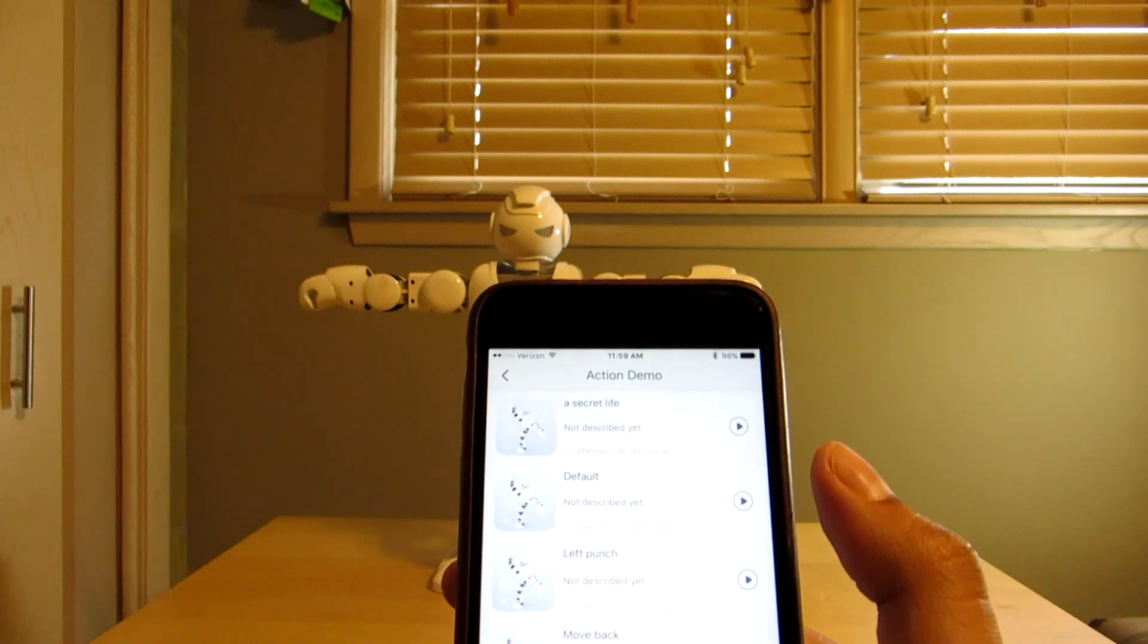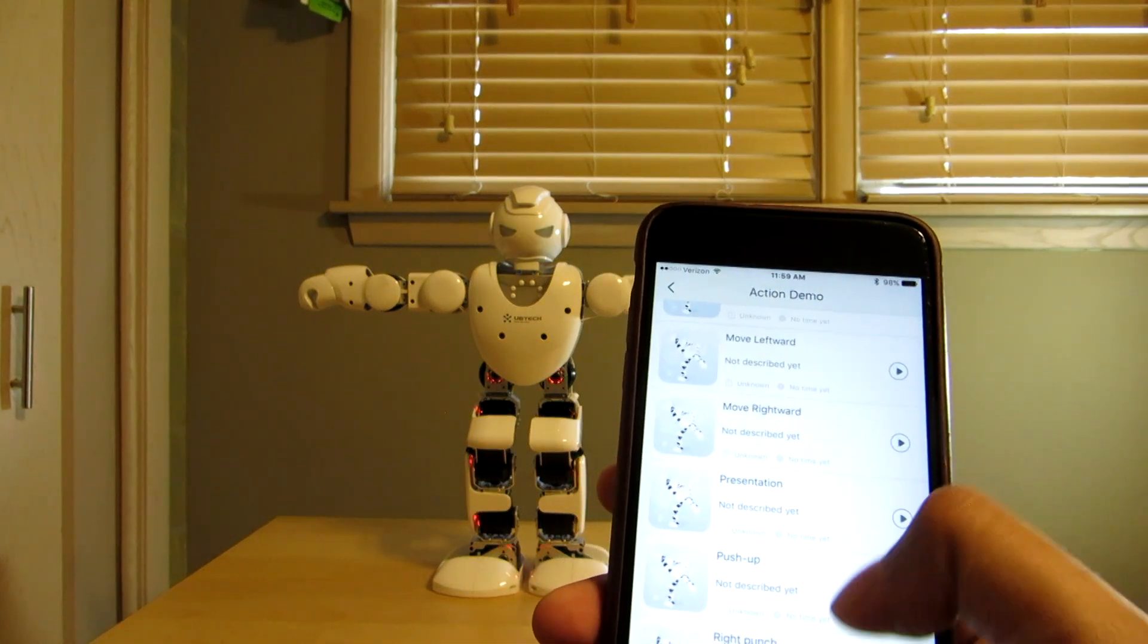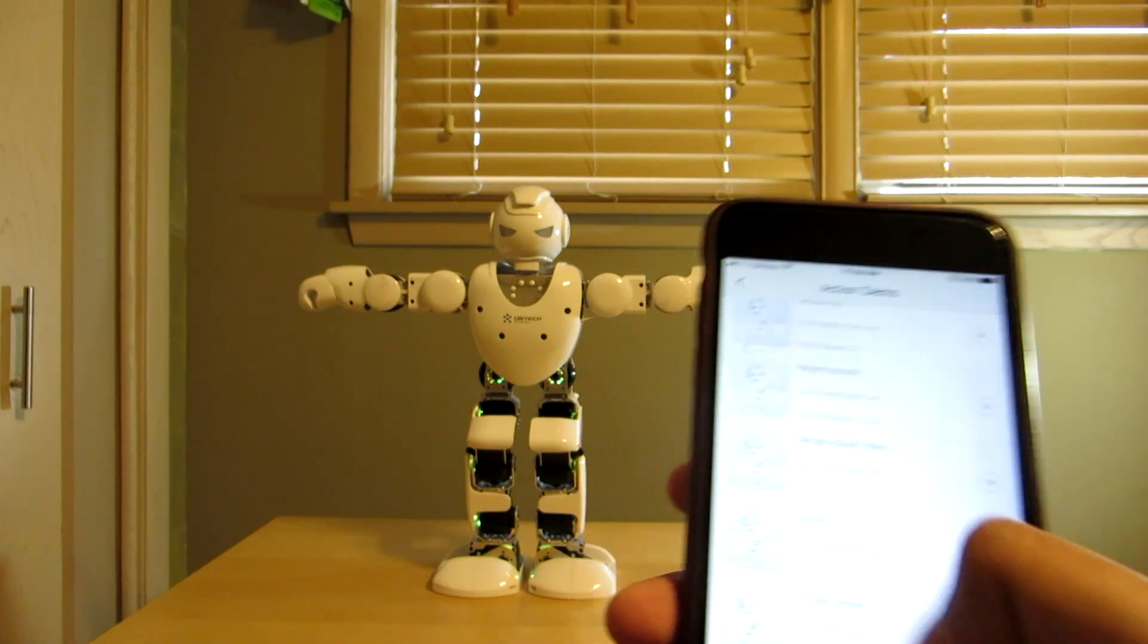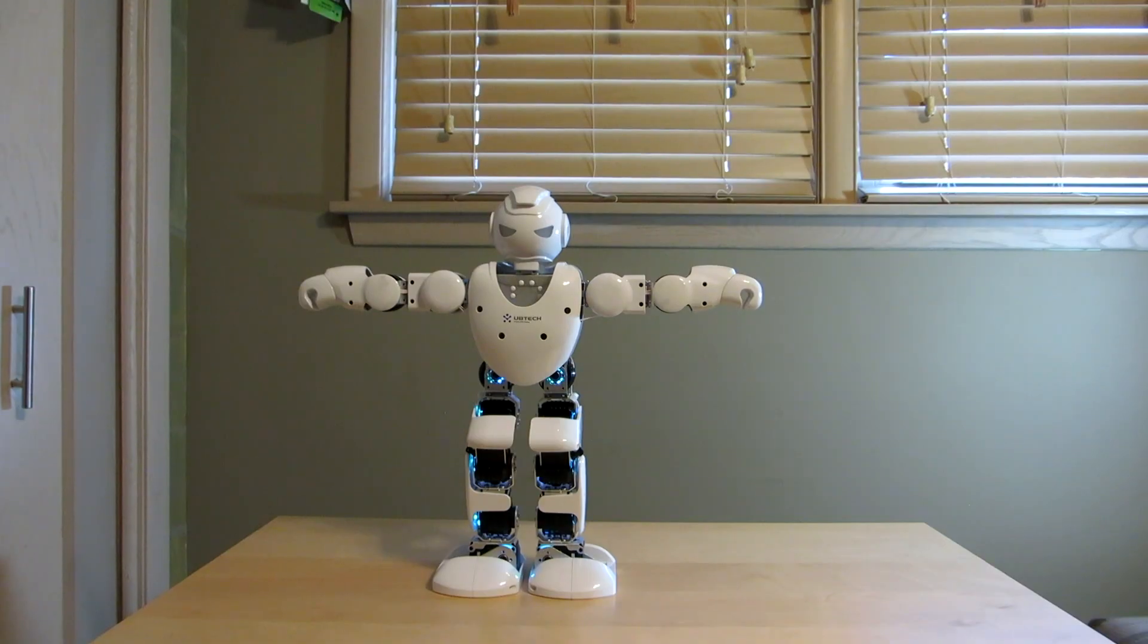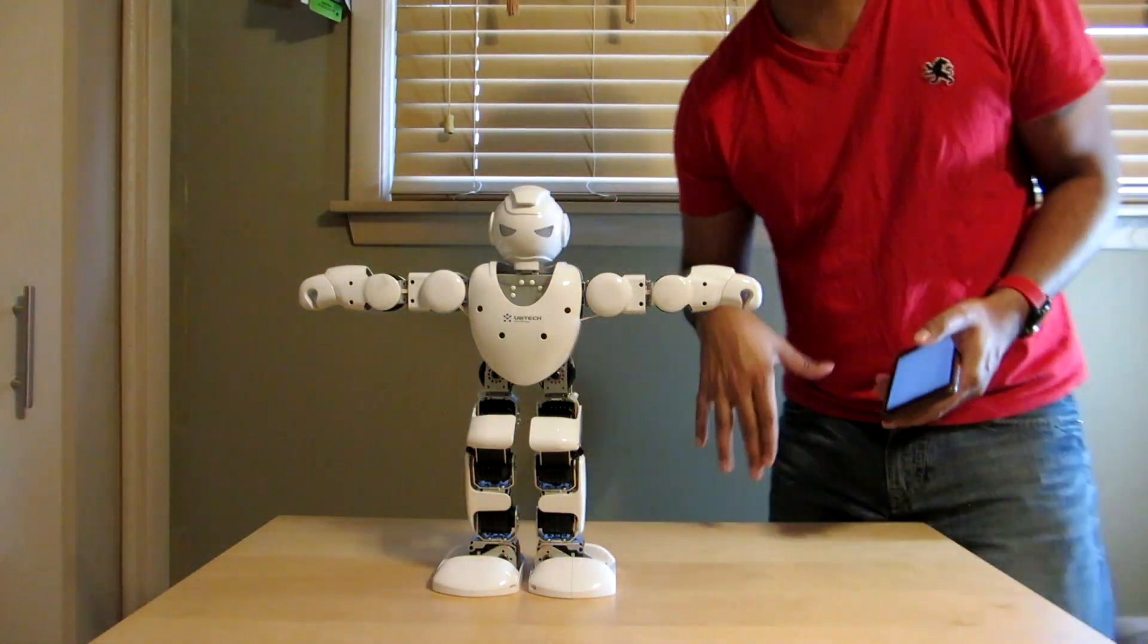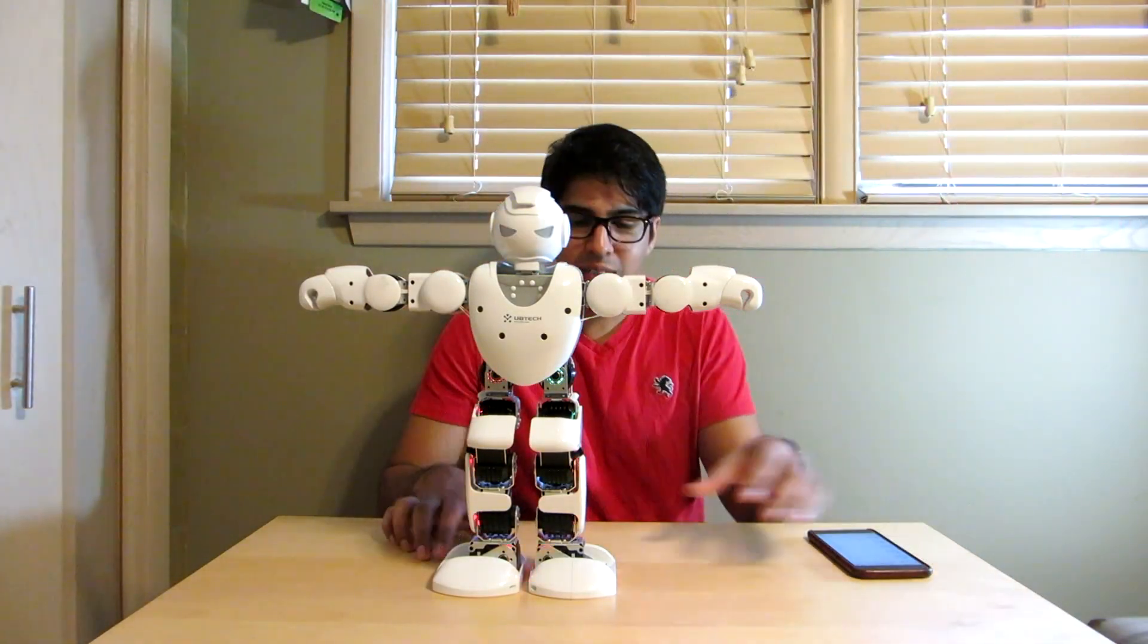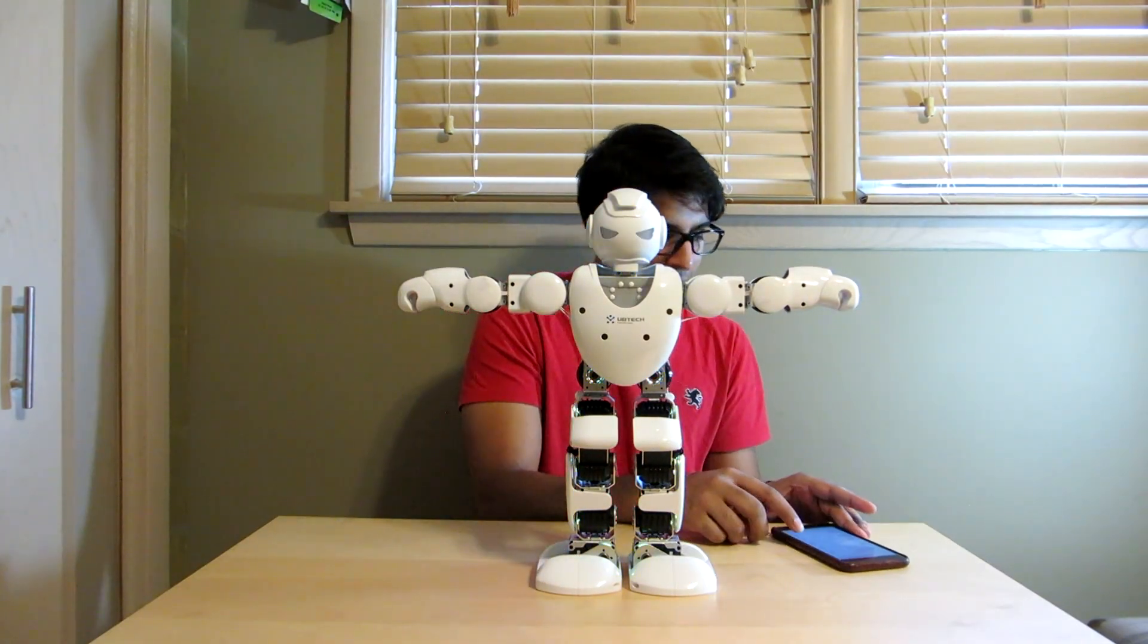Okay, so there's different things here. It says left punch, move back, move forward, right push up, right punch, Trojan horse. So let's go ahead and try one of these. I'm going to go ahead and hit presentation because that's something cool. I'm just a little scared. I don't want him to fall off. So I'm going to kind of stand behind him in the meantime and I'm going to hit play. Let's hit play.